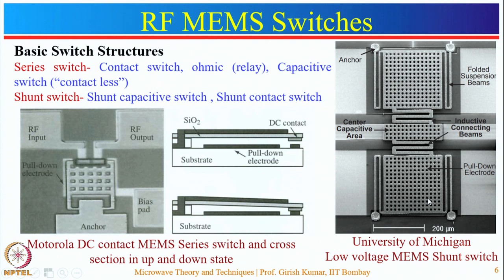The next is the example of a low voltage MEMS shunt switch made by the University of Michigan. It is a capacitively coupled switch. The pull-in voltage is reduced by increasing the area, decreasing the gap, or decreasing the spring constant value. Increasing the area is not feasible as MEMS targets miniaturization. Reducing the gap may reduce RF isolation. So the most feasible solution is to reduce the spring constant value with low mass if possible.